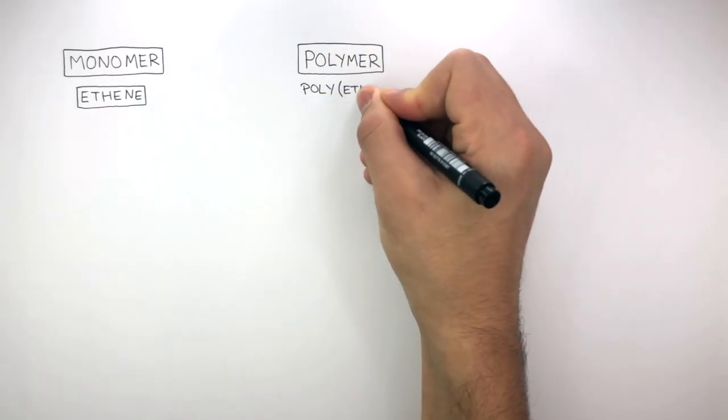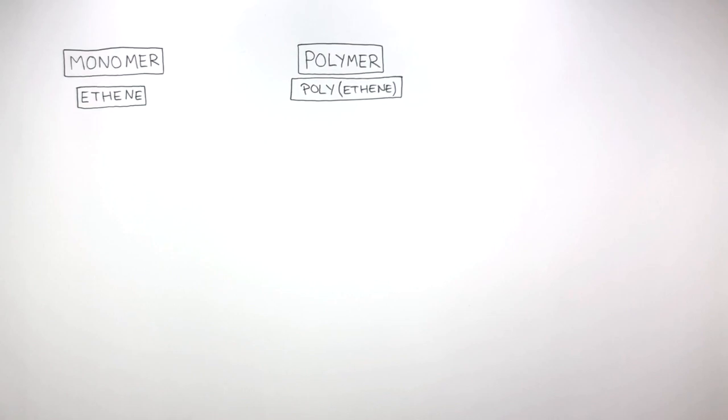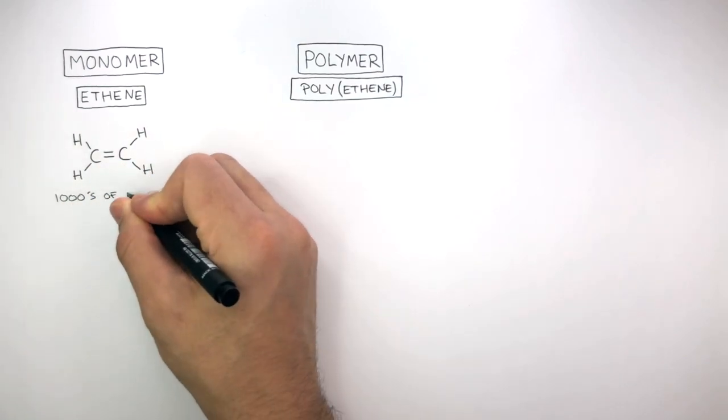So you need to know the monomer ethene forms the polymer polyethene. So what happens is we need the monomer ethene represented by this displayed formula, C2H4. And we need thousands of monomers.